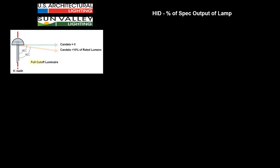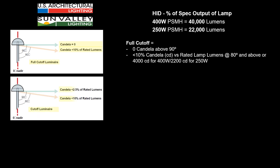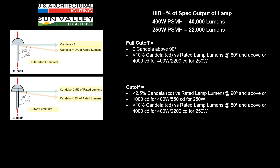A full cutoff luminaire allows no light above 90 degrees and only 10% of the rated lumens in the 80 to 90 degree zone. The rated lumens relate to the actual output of the lamp used. So in the case of a 400-watt metal halide, that would be 40,000 lumens; a 250-watt metal halide would be 22,000 lumens — 10% of which is either 4,000 or 2,200 depending on the wattage. In either case, no light is allowed above 90 degrees. In the case of a cutoff luminaire, it still has 10% of the rated lumens in the 80 to 90 degree zone, but it allows 2.5% of the light output to go above 90 degrees, in acknowledgment of light that may bounce off the structure of the luminaire itself or even the support mechanism such as a pole.